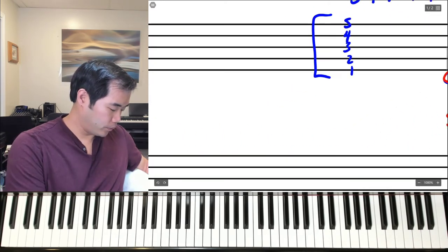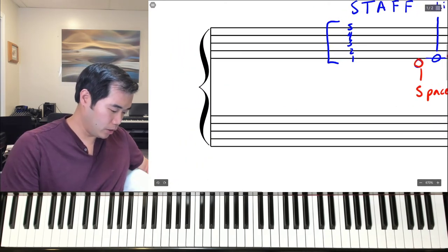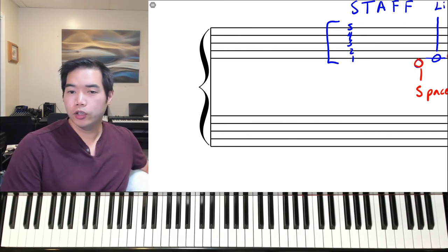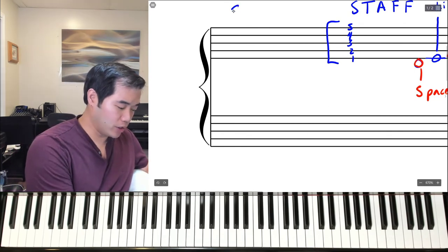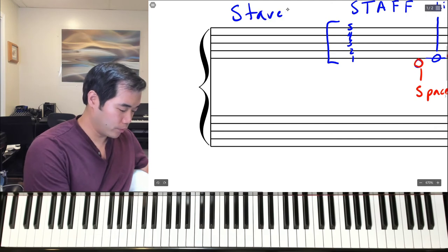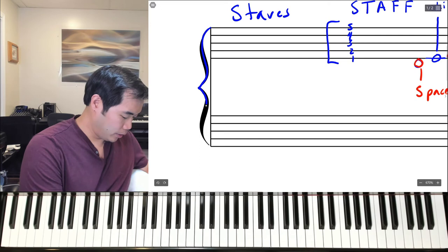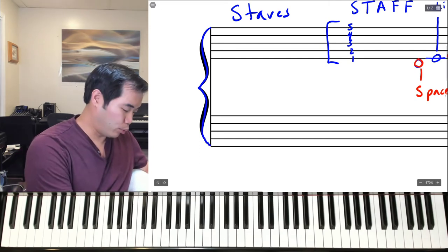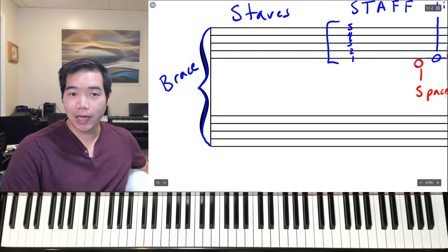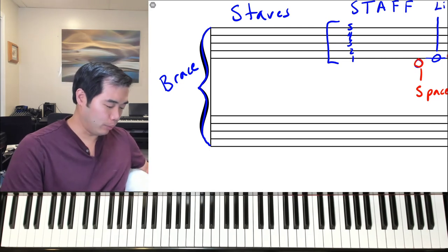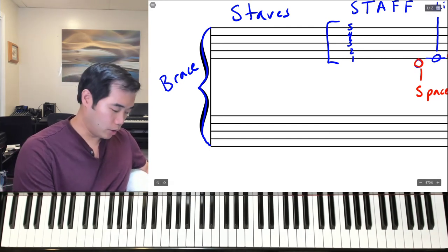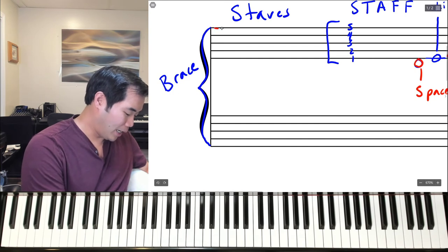Now, sometimes in music we'll see two staves—staves is the word for staff that's plural—connected together by this symbol which is known as a brace. When you have two staves connected together by a brace, it creates what is known as a grand staff.